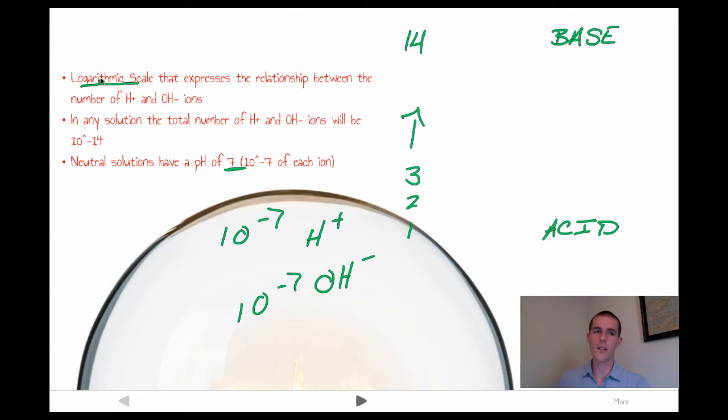I said we're going to talk about the fact that this is logarithmic. Logarithmic means that for each jump, you are increasing by a factor of 10. This means that a 1 is 10 times more acidic than a 2. A 2 is 10 times more acidic than a 3. Here's where things get a little crazy. Let's say we're going to talk about the relationship between a 1, 2, 3, and 4.